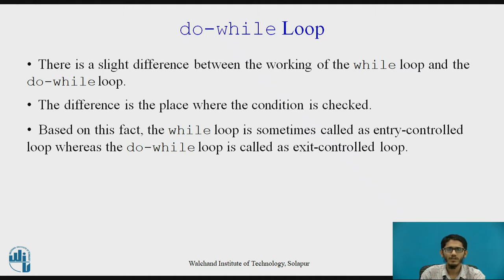There is a slight difference between the working of the While Loop and the Do While Loop, which we saw in the previous lecture. The difference is the place where the condition is checked. A condition needs to be true for a loop to execute. Based on this, the While Loop is sometimes called an entry controlled loop, whereas the Do While Loop is called an exit controlled loop.